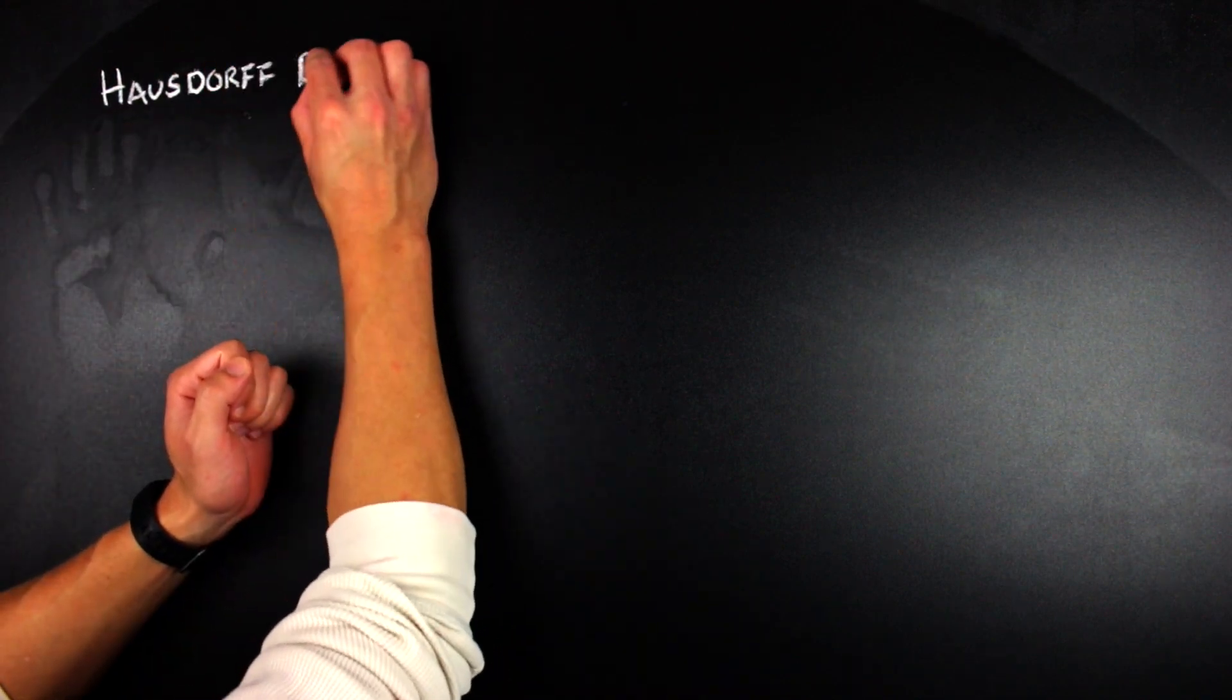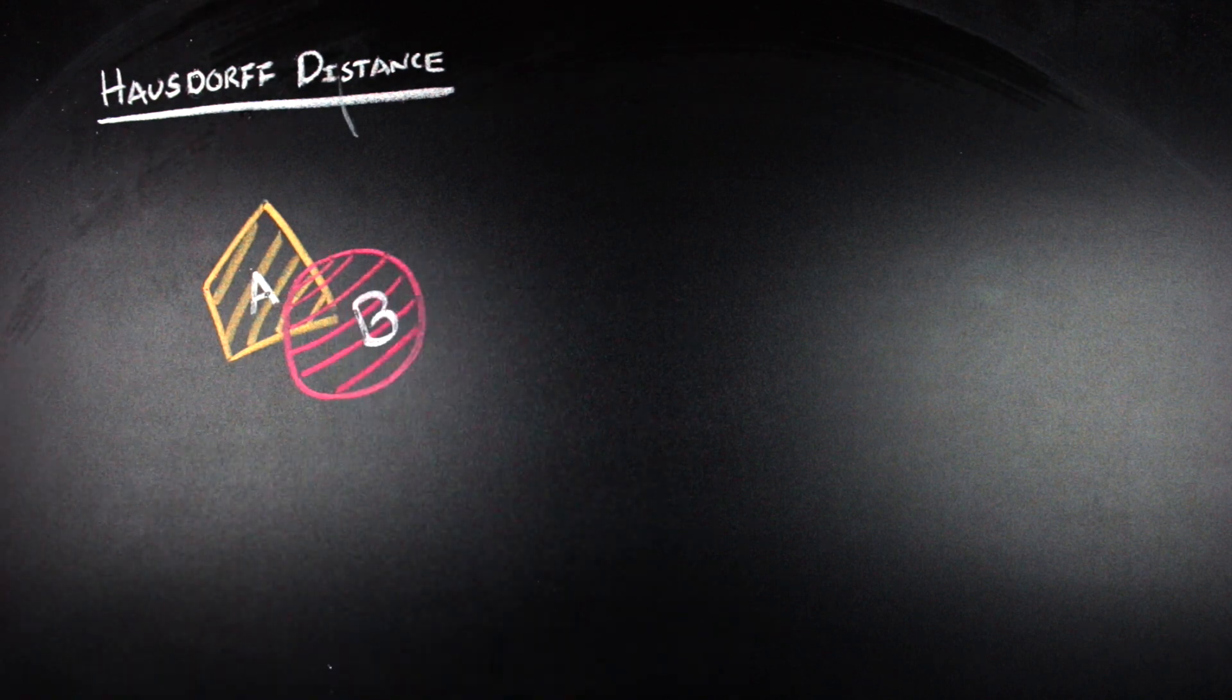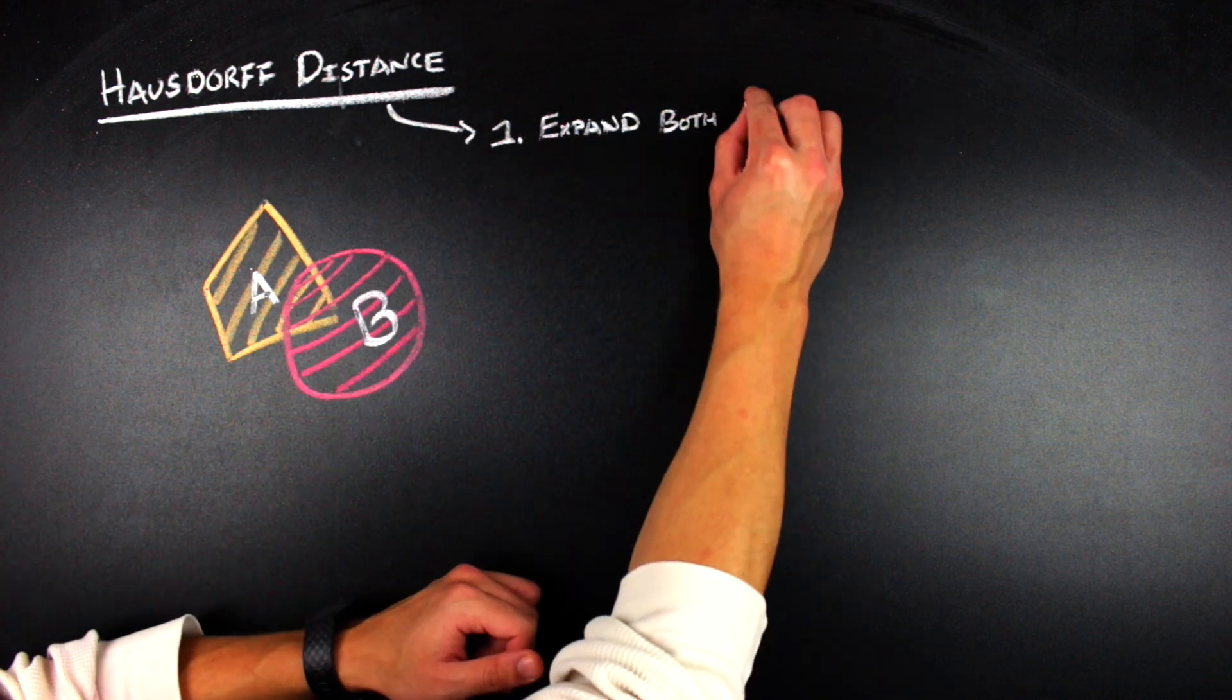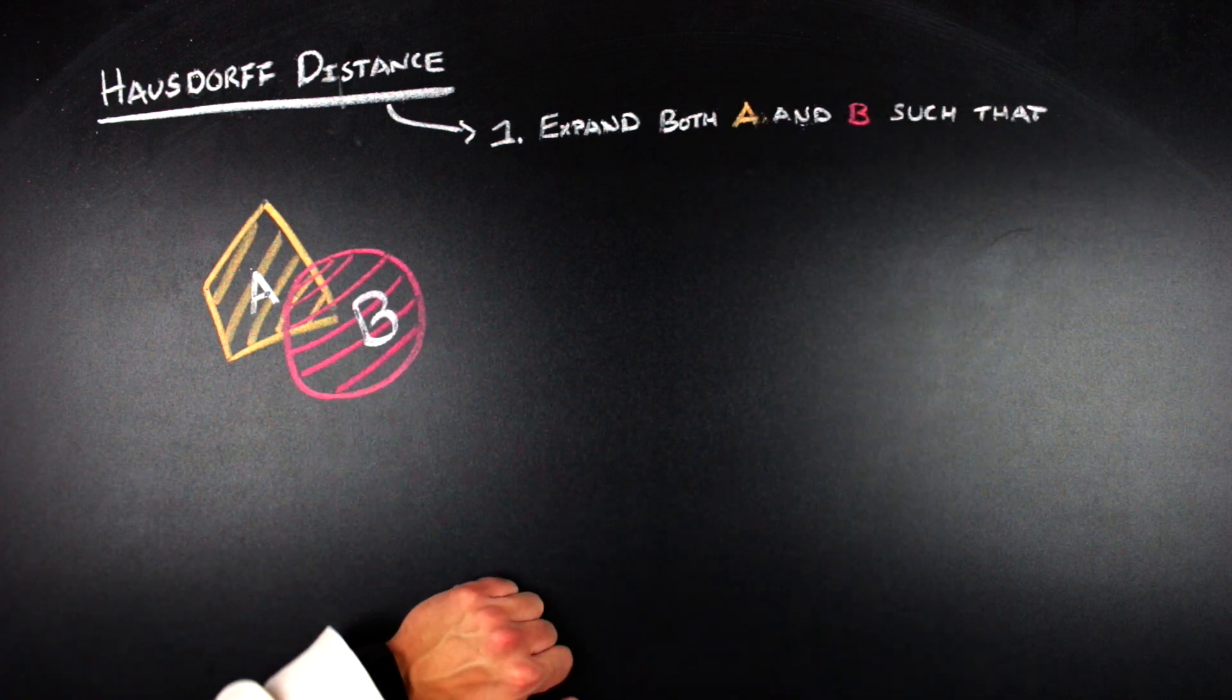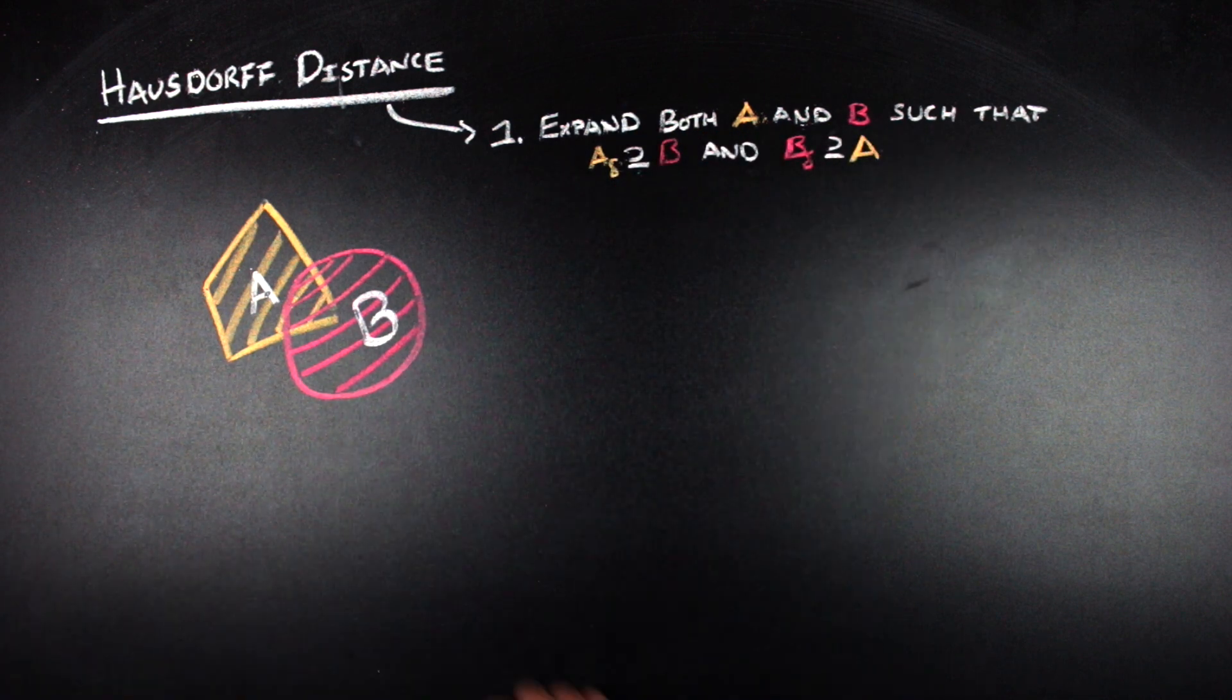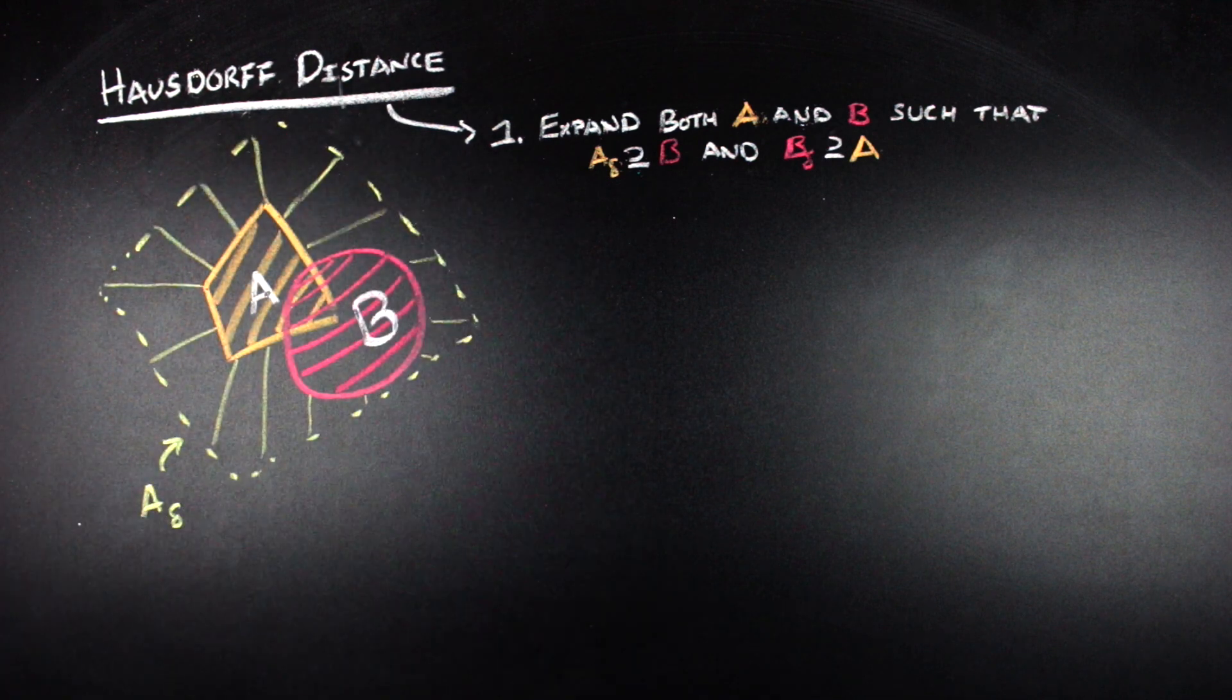If we go ahead and look at two different compact sets, A and B, the first thing that we're going to do is we're going to go ahead and try to expand A and B by some delta, which is going to be the same for A and B, such that A delta, the expansion of A by delta, is going to contain B, and B delta, the expansion of B by delta, contains A. We know we can do this because our compact sets are bounded, so we always know that there is going to be some delta that's going to be large enough that we can capture the other set.